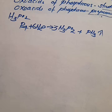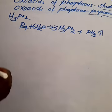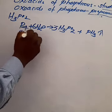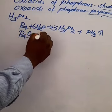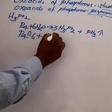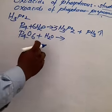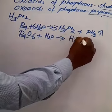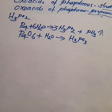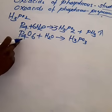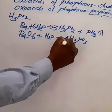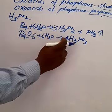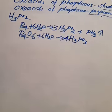For orthophosphorous acid: P4O6 reacts with water molecules to give H3PO3. To balance: there are 4 phosphorus atoms on the reactant side, so make it 4 H3PO3 on the product side. Adjust water accordingly and the equation is balanced.